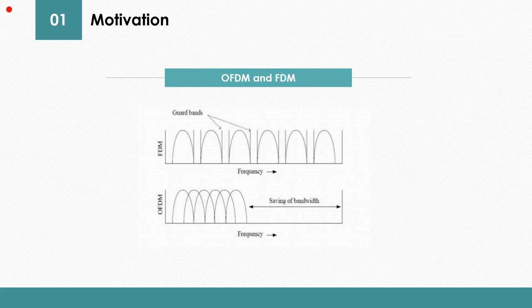While in OFDM, the subcarriers are designed to be orthogonal. This allows the subcarriers to overlap and save bandwidth, thus achieving higher data rates.